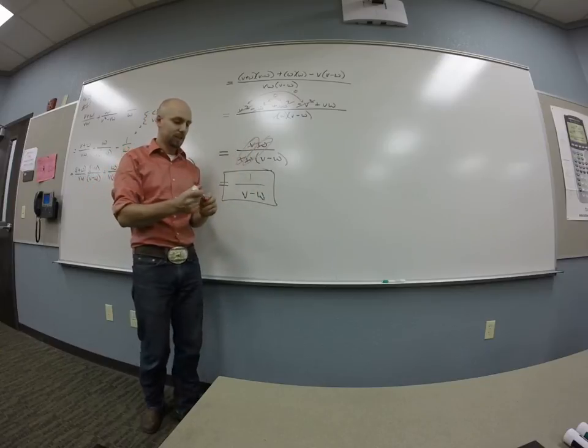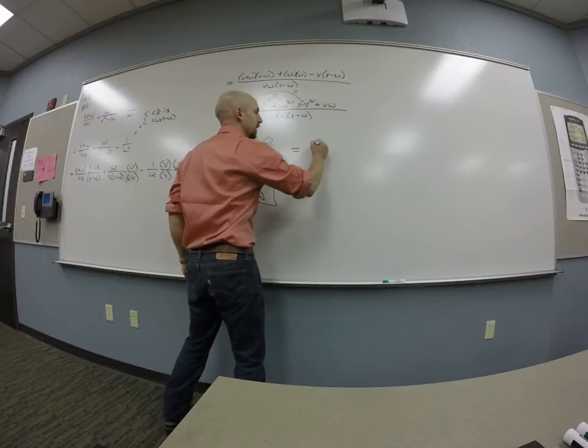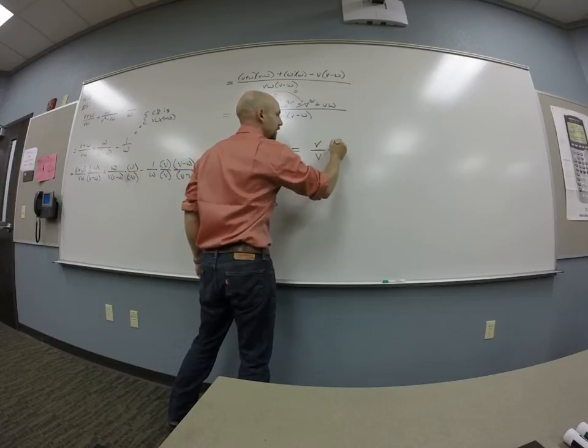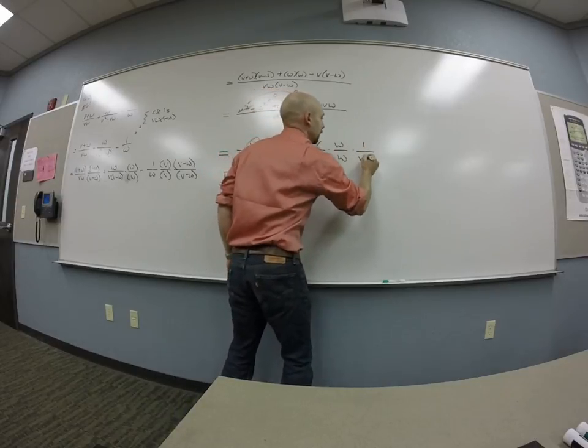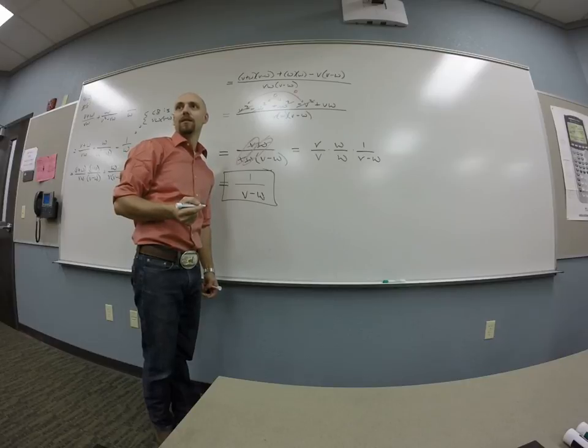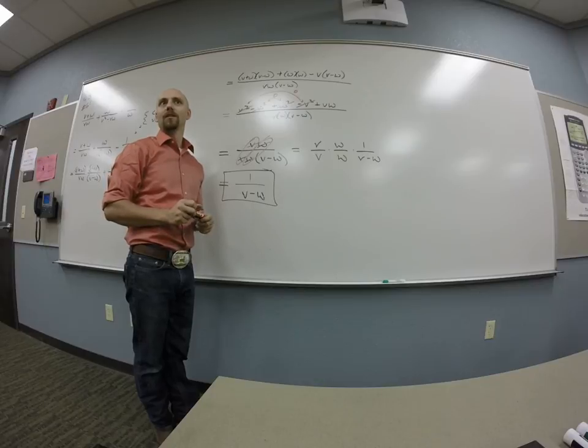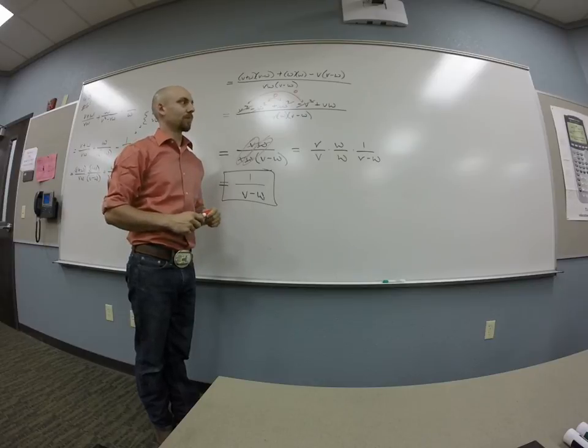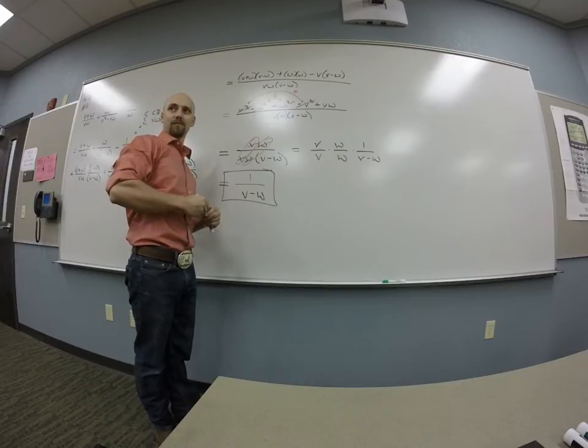Really, I was saying, right, this, I really could have rewritten this as V over V times W over W times one over V minus W, right? So by doing that, are you basically just saying like there's one length of this thing? Maybe half of it. See, so.